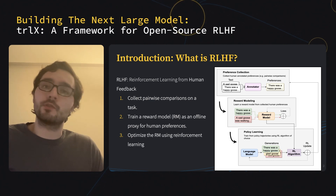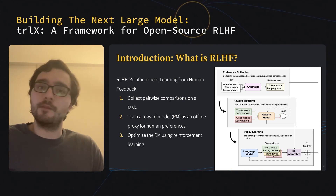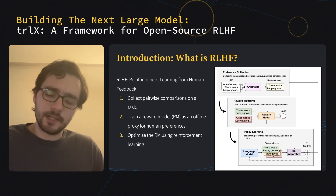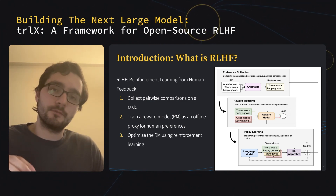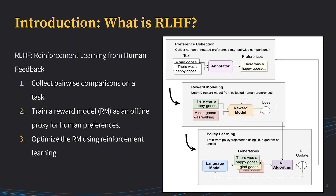For example, let's say I want to write happy stories — look at the right-hand side — and the model generates two potential responses, one about a happy goose and one about a sad goose. Since I want to write stories which are happy, I'm going to select the response about a happy goose as more preferable. These pairwise comparisons can then be used to train a reward model, which is an adapted language model that assigns a higher score or reward to the response preferred by the user. You can think of this reward model as an offline proxy for the human preferences captured in stage one.